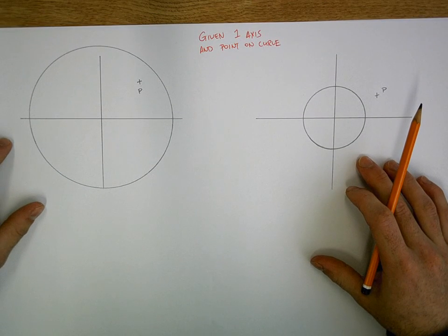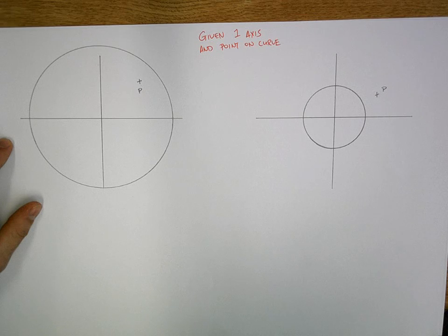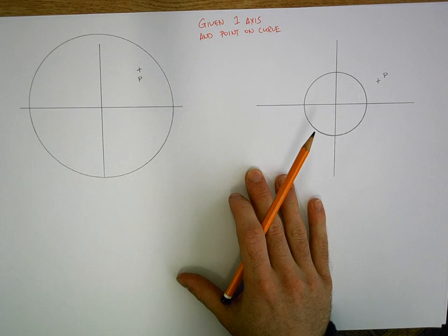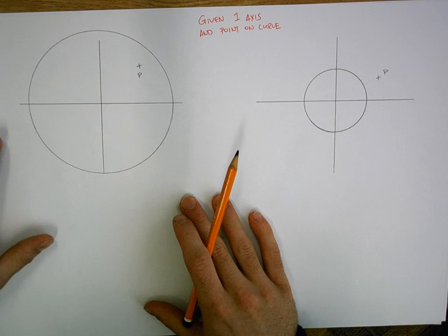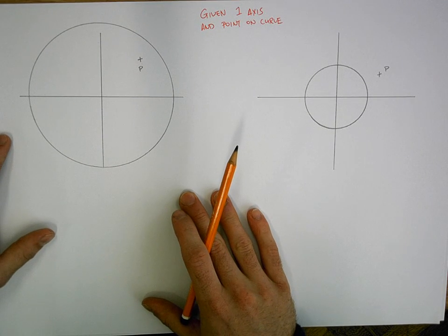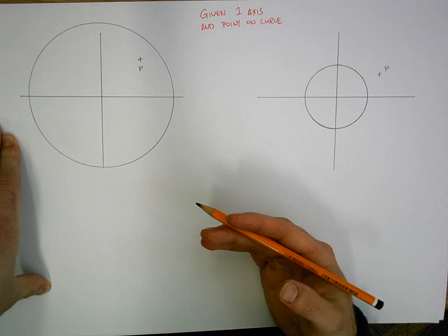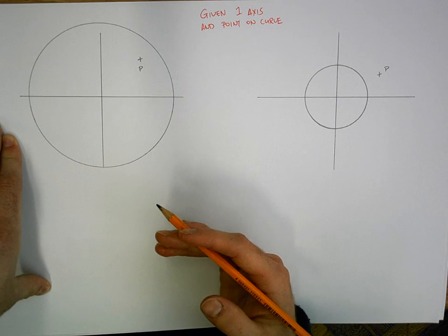Now this comes up a good bit at higher level, almost all the time actually if you're given an ellipse question, you're missing one of the axes. So the first thing you should do, just out of habit, is sketch out at the side of your sheet how do I draw an ellipse if I have all the information that I need.